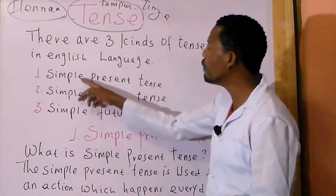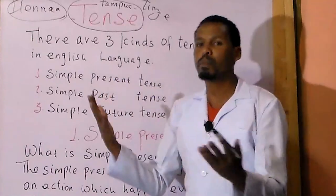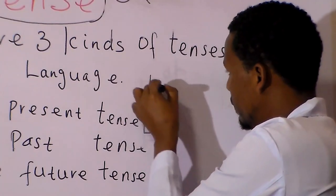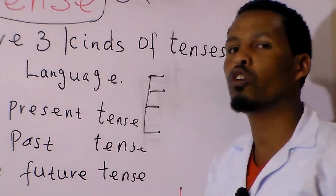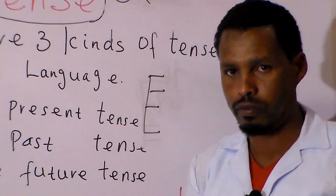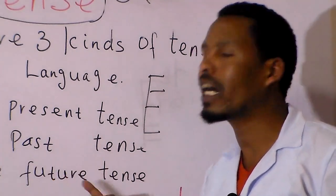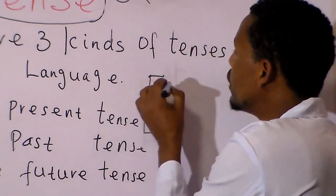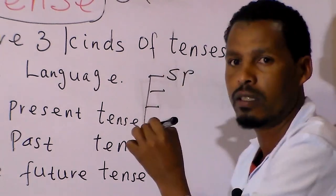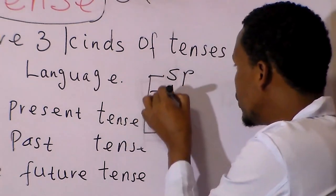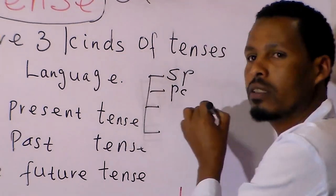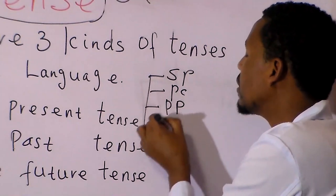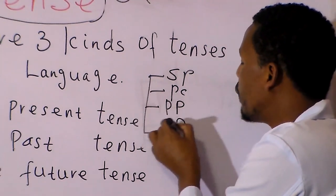The four sub-tenses of the present tense are: simple present tense, present continuous tense, present perfect tense, and present perfect continuous tense.